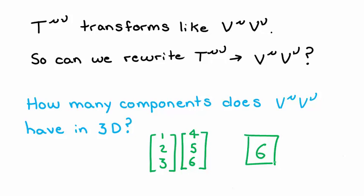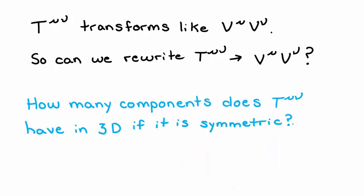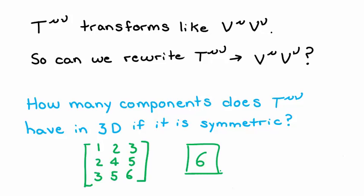But wait, what if we demand that t mu nu is symmetric? In 3D, how many components would this have? Now, we see that if t mu nu is symmetric, it can only have up to six different components. So it seems like we can substitute one for the other as long as t mu nu is symmetric.